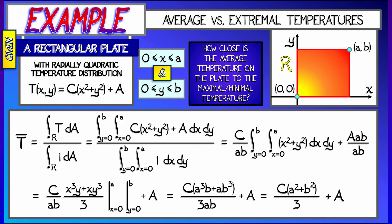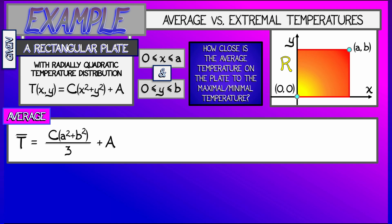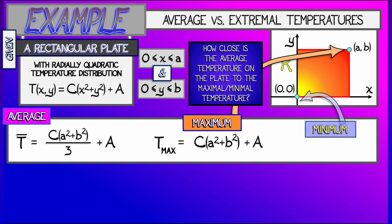Okay, that's the answer that we get. That's not so bad. That's our average temperature. But the question is, how close is this average to the max and the min? Well, the max temperature is clearly happening at the upper right-hand corner, AB. And that maximal temperature value is C times quantity a squared plus b squared plus the ambient temperature, A. Likewise, the minimal temperature is happening at the origin, at the lower left-hand corner. And that is simply A, since x and y are 0.